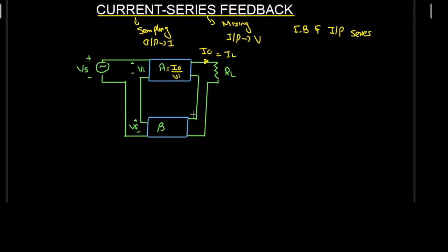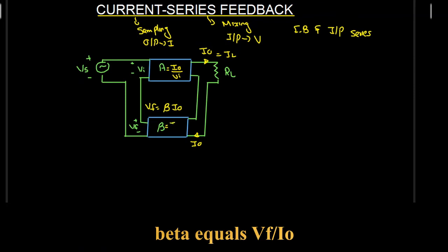Now, what will be the factor B? Because we are taking part of the output current and feeding it to the feedback network, VF is going to be equal to beta times I0. So VF equals beta times I0, and beta will be equal to VF divided by I0. This is the configuration of current series feedback.